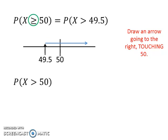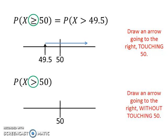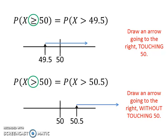Then we have probability of x greater than 50. To determine whether to add or minus 0.5, draw a line with 50 on it like this. Because of the greater than sign here, we need to draw an arrow going to the right of 50 without touching the 50. In order for the arrow to not touch 50, we move forward a little bit from 50. Since we move forward a little bit, we need to add 0.5 to 50. Thus, the probability becomes probability of x greater than 50.5.